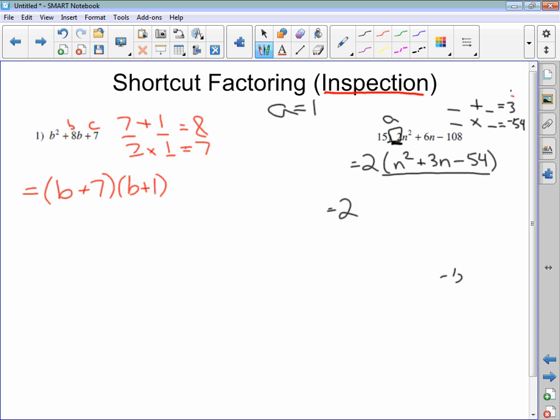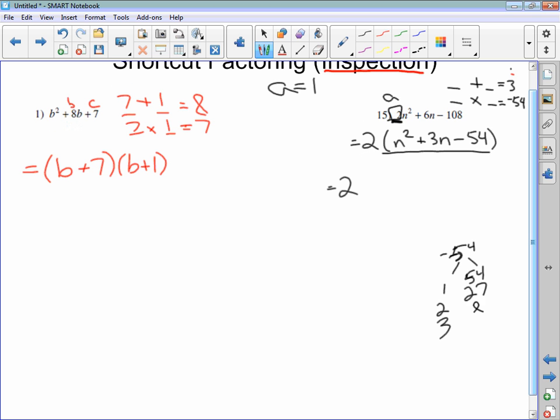Factors of negative 54, I'll just write down here. Are 1 and 54, and either one can be negative. 2 and 27. 3 and 18. 6 and 9. And I look at 6 and 9 and I say, hey, I see a difference of 3 between those two numbers. So I need positive 3. So it's got to be positive 9 and negative 6. Negative 6 and positive 9 multiply to give you negative 54, add to give you 3. And there are your two factors.